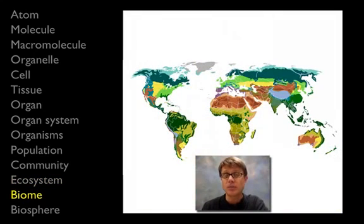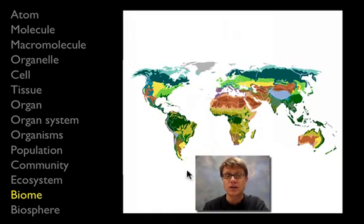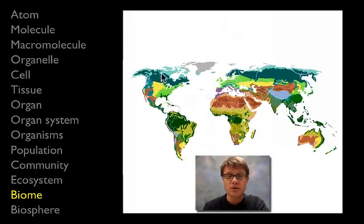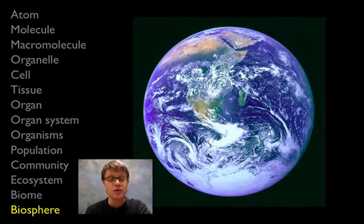Now we go to the level of a biome. A biome consists of ecosystems that have similar climates — the same temperature and the same precipitation throughout the year. Examples include tropical rainforest, desert, northwestern coniferous forest, tundra, and taiga. These are all types of biomes, and the biomes together form what's called the biosphere.